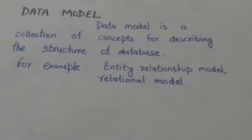Data model provides the necessary means to achieve abstraction. Data model hides the storage and implementation details from the users. For example, entity relationship model and the relational model are the data models which provide a way to describe the design of a database at the logical level.